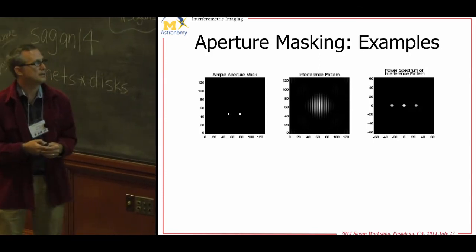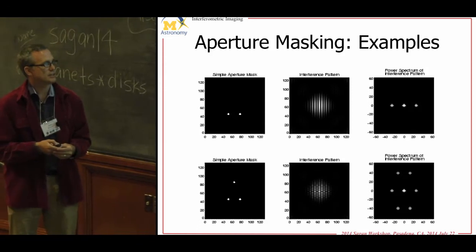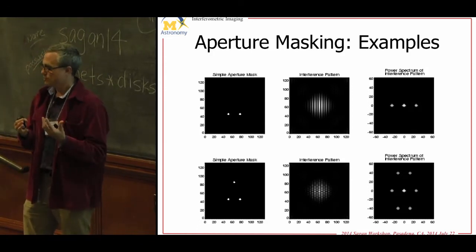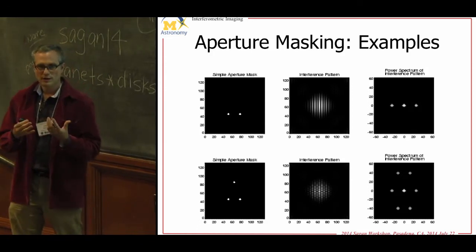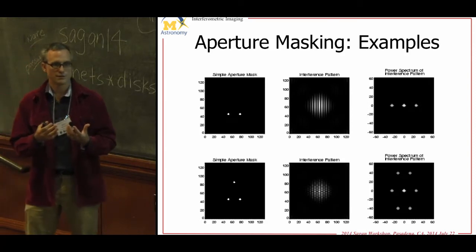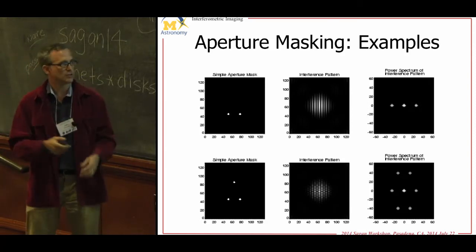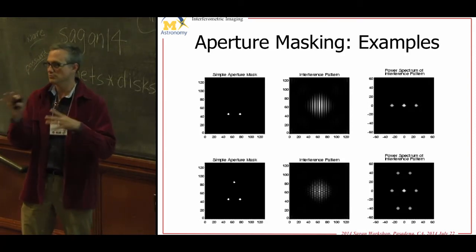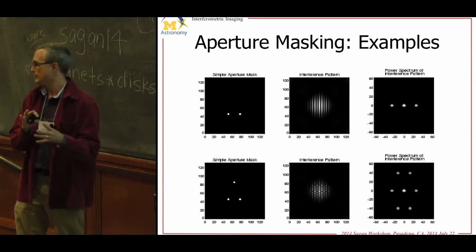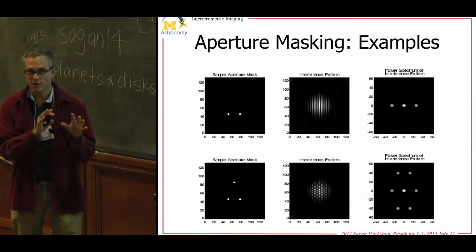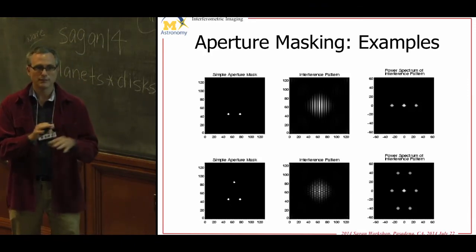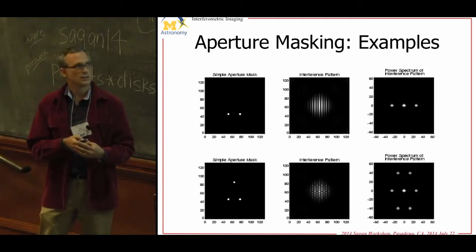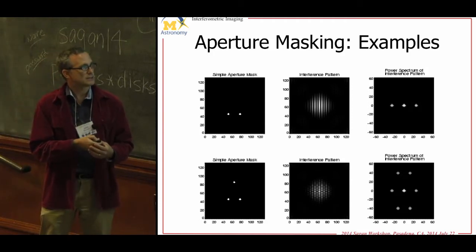With three apertures you start to see criss-crossing fringes. Without adaptive optics to freeze the atmosphere, these fringes are moving around all the time — the spots move around. They're always there, never disappearing, but moving around as the phases change.